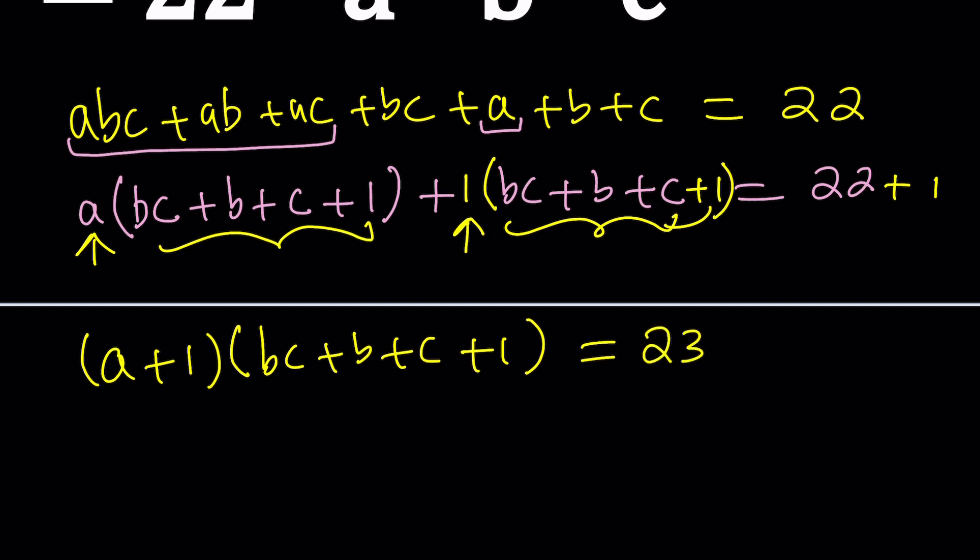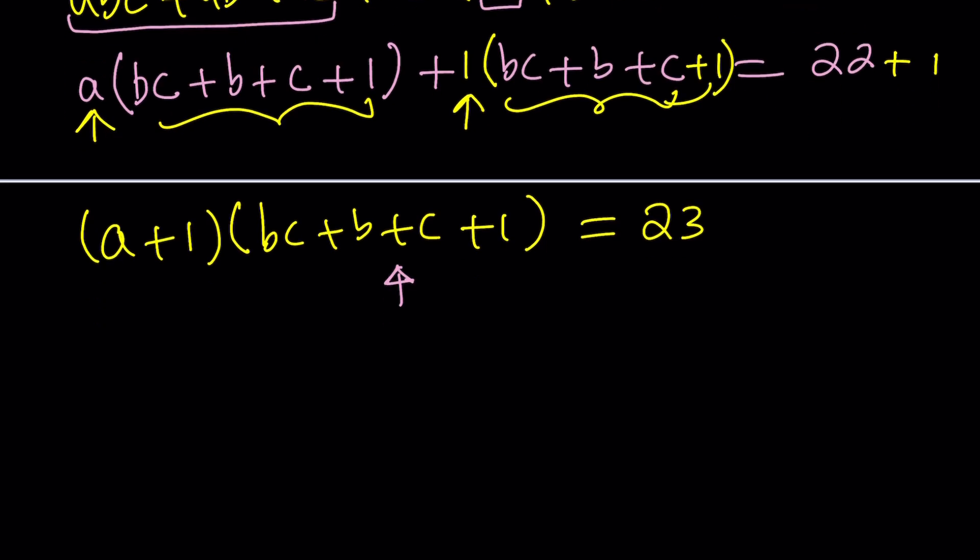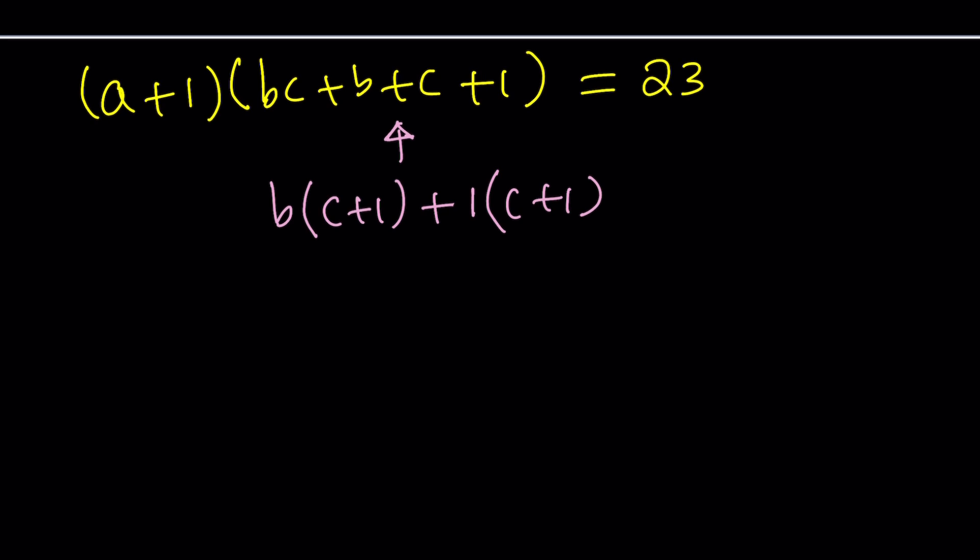Awesome. Now, what is the next step? The next step is factoring again. Guess what? The second factor is factorable. Factors that are factorable. What else can you ask for? So notice that we can factor out a b. That's going to be c plus one. Followed by one times c plus one. Which means this can be written as b plus one times c plus one. And of course, include the a plus one in the product. And you have everything you need.